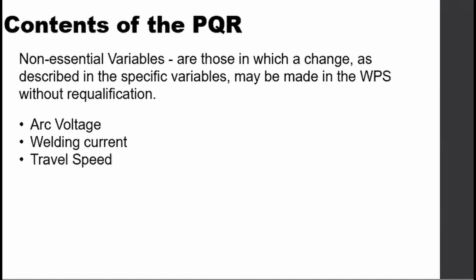Non-essential variables are those that, if changed as described in the specific variables, may be made in the WPS without re-qualification. Examples include arc voltage, welding current, and travel speed.